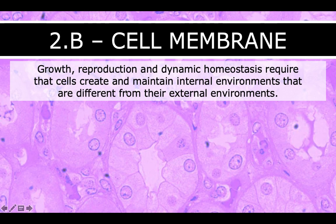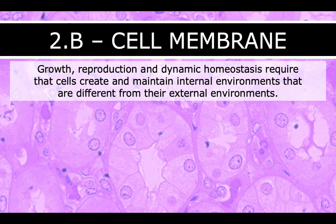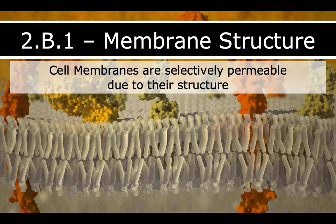We are going to be talking about cell membranes. These are the outside part of a cell — the thing that keeps the cell a cell. It keeps the things that are inside inside, so that the outside can't get in unless it's supposed to. The cell membrane is pretty integral to preventing your outside from spilling into your inside, or vice versa.